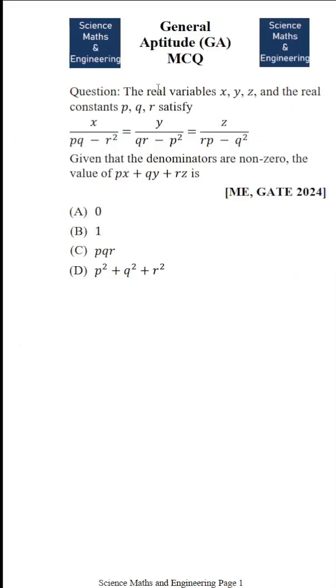In this problem, x, y, z are real variables and p, q, r are real constants, and we satisfy this equation: x by pq minus r square is equal to y by qr minus p square is equal to z by rp minus q square.